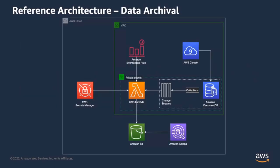Now let's discuss a reference architecture for implementing data archival. This architecture is available as a hands-on lab in our DocumentDB workshop portal with a CloudFormation template to deploy the solution. The reference architecture is based on DocumentDB change streams — a feature that provides a time-ordered sequence of change events occurring within your cluster's collections. Amazon EventBridge triggers a Lambda function every minute to ensure continuous polling of DocumentDB change stream events. This Lambda function connects to DocumentDB via credentials stored in Secrets Manager and watches for changes in a predefined time period — in this demo, 15 seconds.